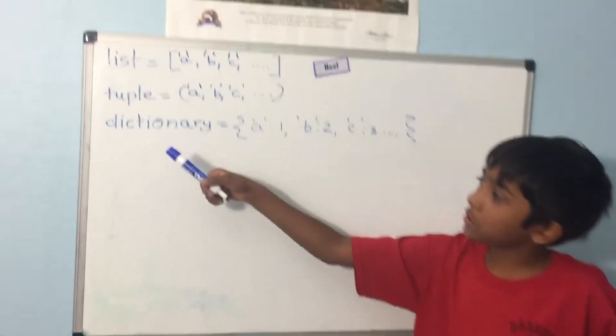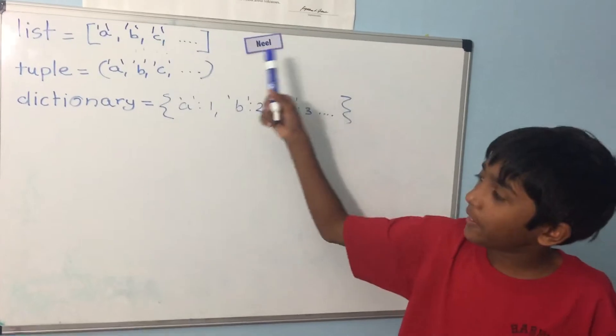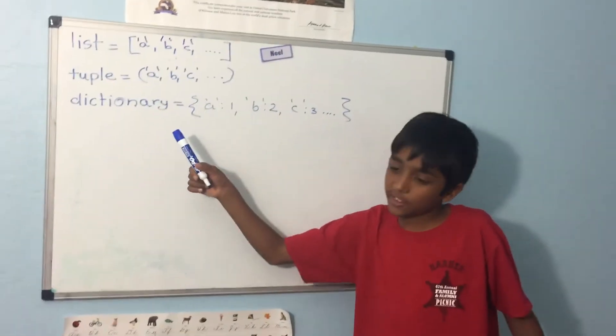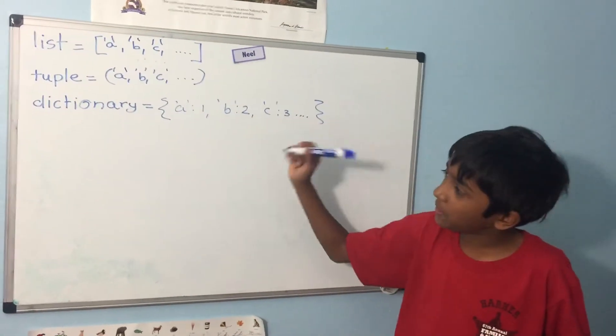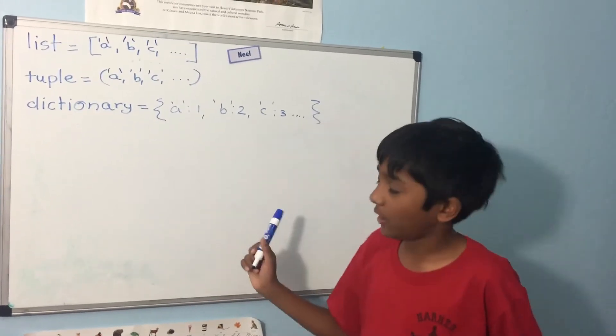So first, the list and the tuple. As you can see they're very similar. The only difference is that once you define a tuple you cannot change it at all.